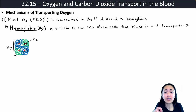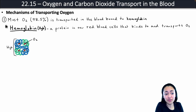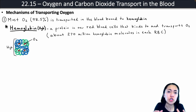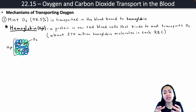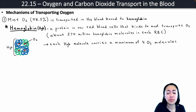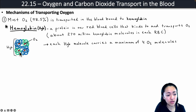Hemoglobin allows our blood to carry large amounts of oxygen that would not be possible if these molecules did not exist. To put this into perspective, there are about 270 million hemoglobin molecules in each red blood cell. Red blood cells are pretty much just jam-packed with hemoglobin, and that is their primary job — to transport oxygen. Each hemoglobin molecule carries a maximum of four oxygen molecules, so there is a binding site for four oxygen molecules per hemoglobin.